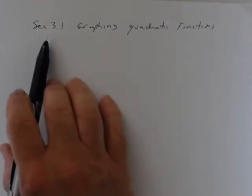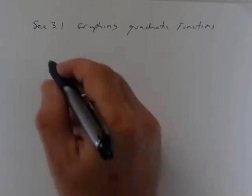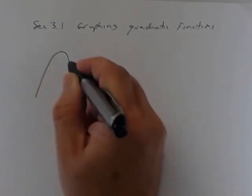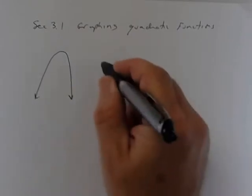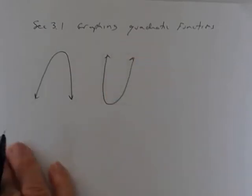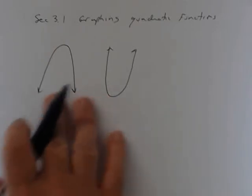The parabola — the graph of a quadratic function based on what you did last semester — looks like this. The parabola either opens down or it opens up. When you graph them, they'll look one of these two ways.